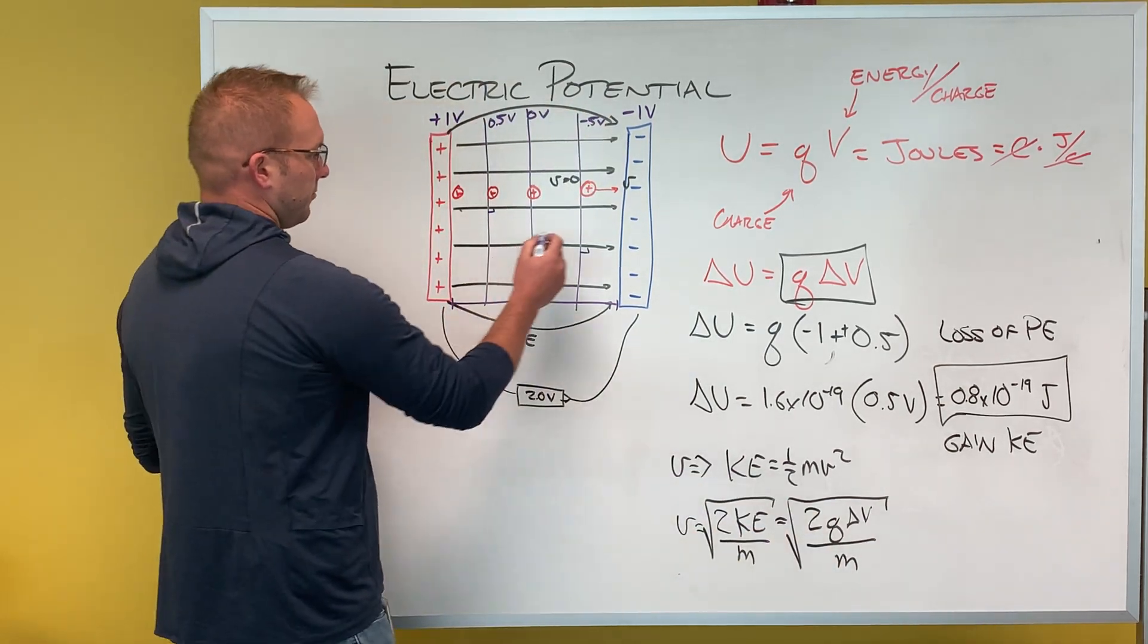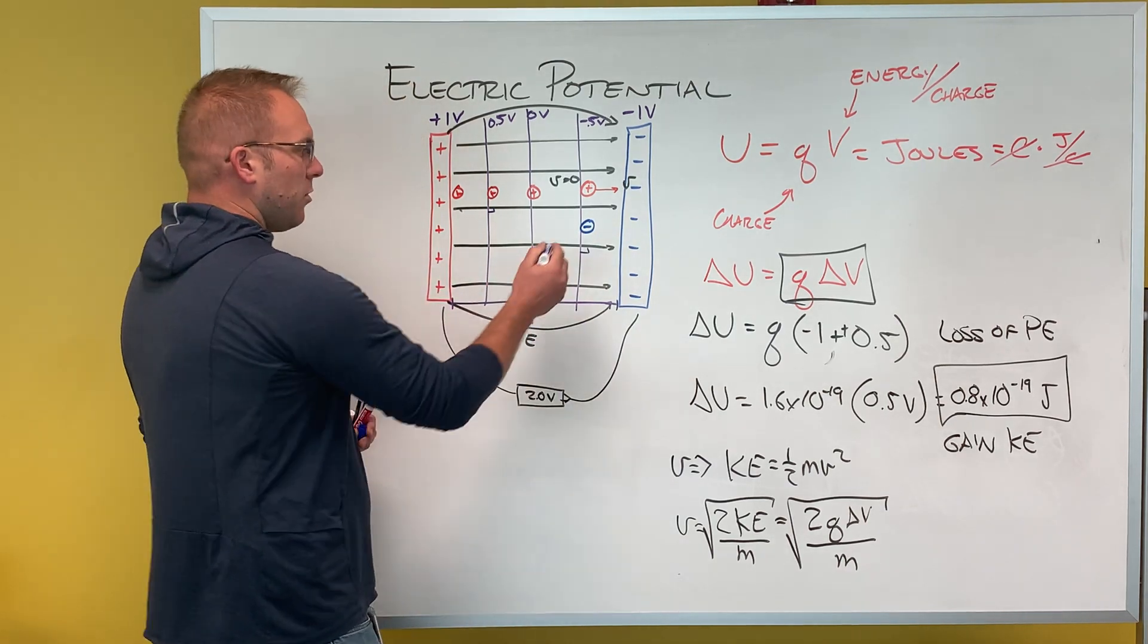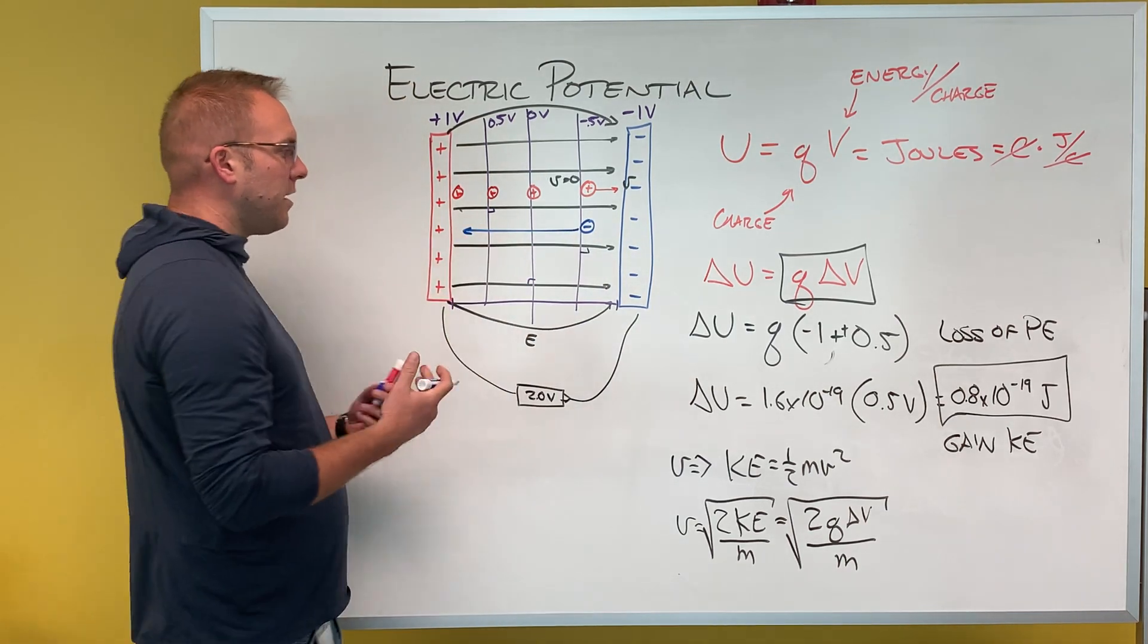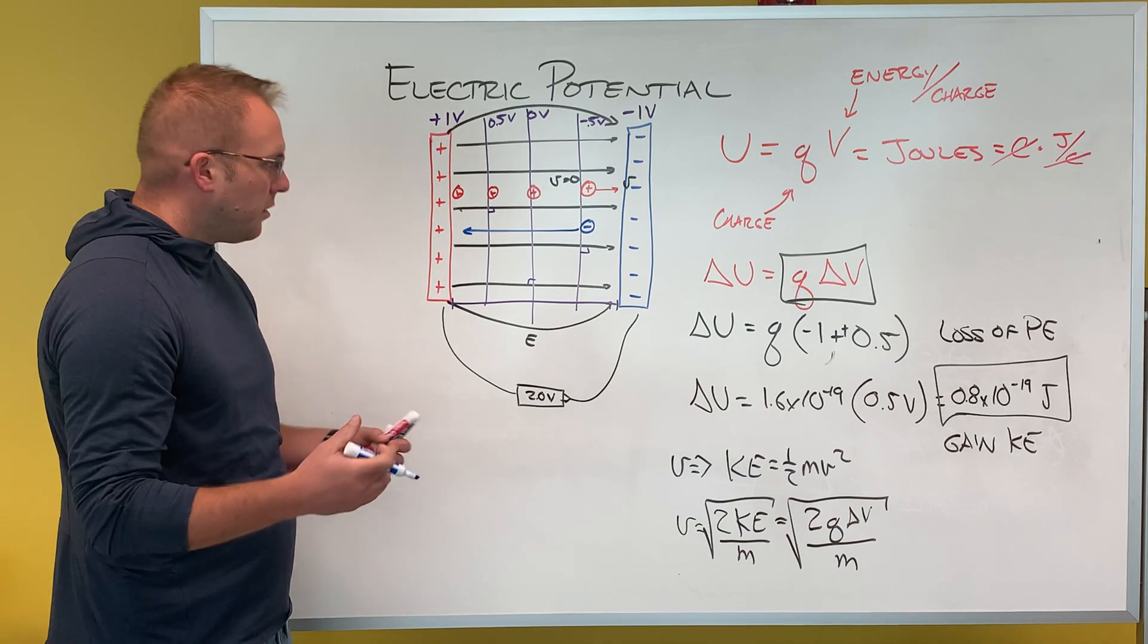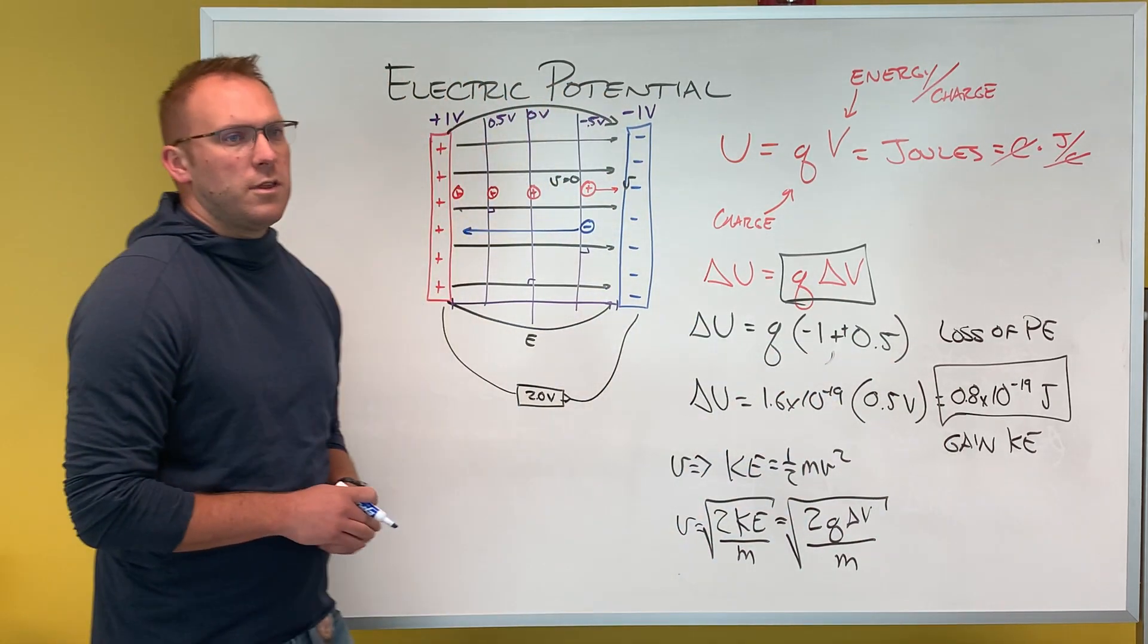If I had a negative charge here, it would have moved this way. And I can again find speed and the change of energies based upon this equation that we have here.